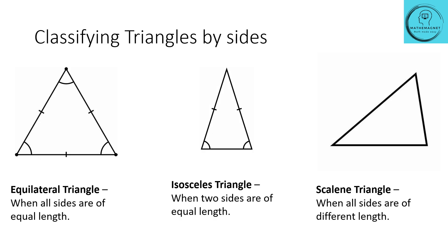Let us first understand how triangles can be classified based on their sides. In this first triangle we will see that all the sides are of equal length. When in a triangle all sides are measured the same, they are called an equilateral triangle. We should also note that all the angles inside an equilateral triangle will always be equal to 60 degrees — that is, each angle will be equal to 60 degrees.